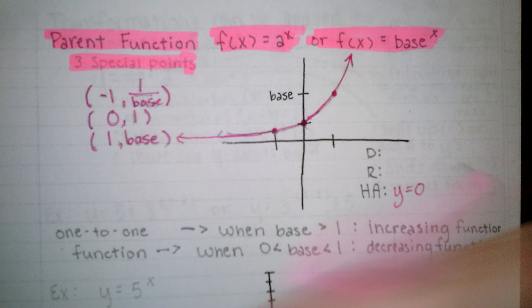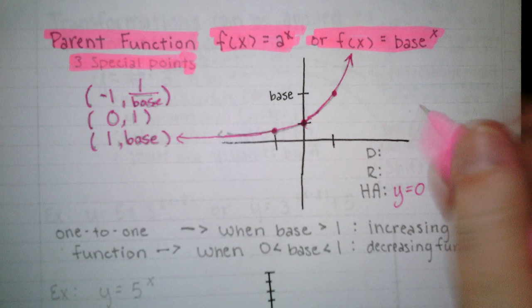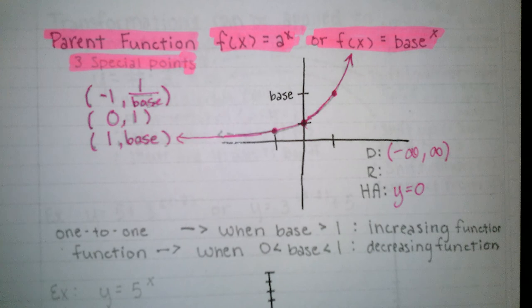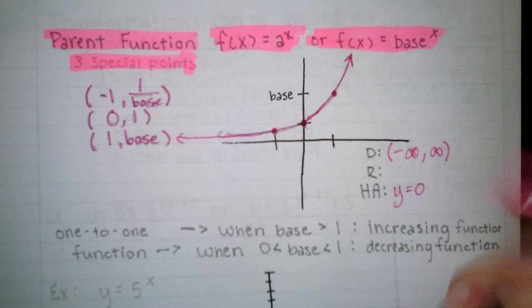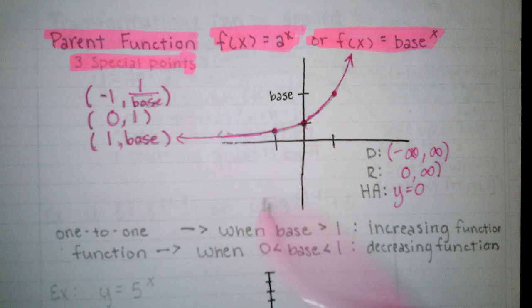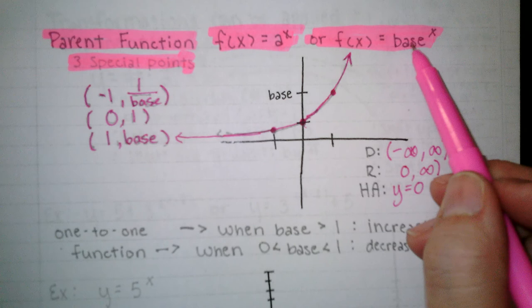The domain for every exponential function is negative infinity to infinity. The range will vary depending on where your horizontal asymptote is. But it's going to, if the function is zooming up like this, it's going to start at the value of the horizontal asymptote and head towards infinity. Now since it can never cross that horizontal asymptote, because I can't take 2 to any number is never going to give me 0, it's not going to include 0. So for that reason, the range on exponential functions will always be an open-ended interval.